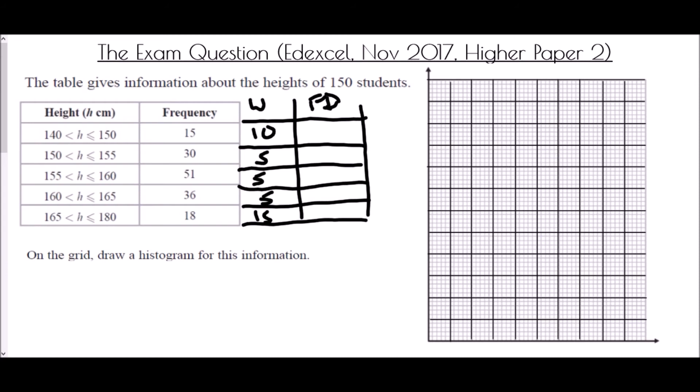Now again to get the frequency density, that is going to be our frequency divided by the width. In this case we have 15 divided by 10, that is 1.5. We have 30 divided by 5, that is 6. We have 51 divided by 5, so that is 10.2. We have 36 divided by 5, that is 7.2, and we have 18 divided by 15 which is 1.2. Now each of those you could just type into a calculator to work out as this is paper 2.